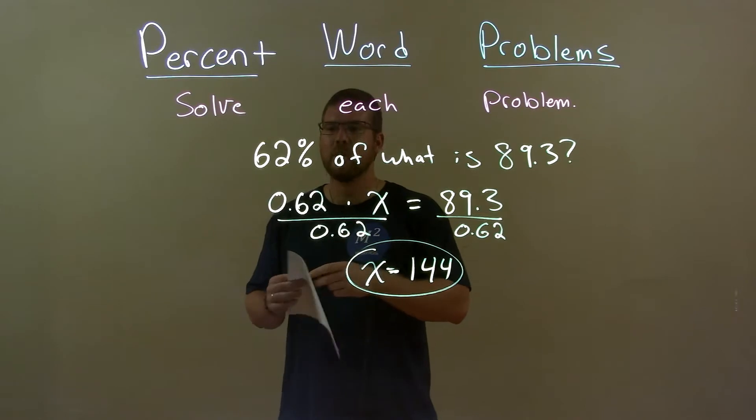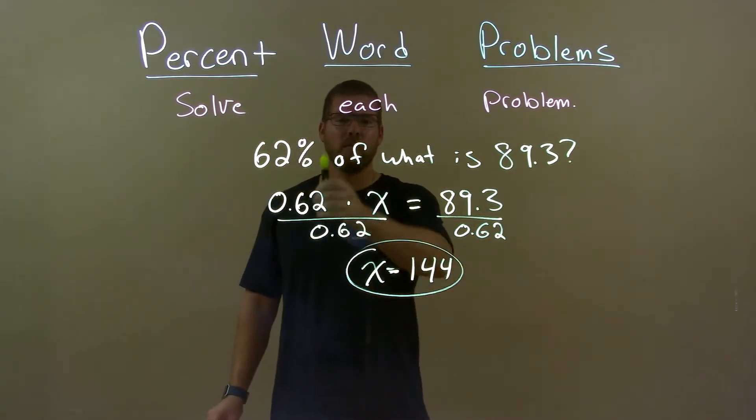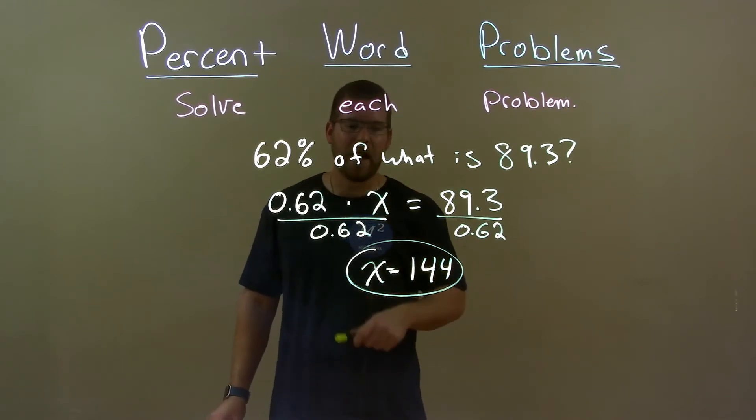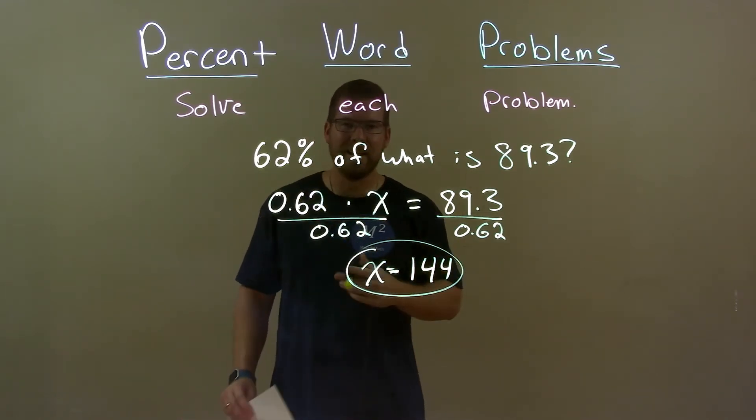So, quick recap. We're given 62% of what is 89.3? Well, we wrote that as an equation and solved for x. We got 144, so my final answer here, 62% of 144 is 89.3.